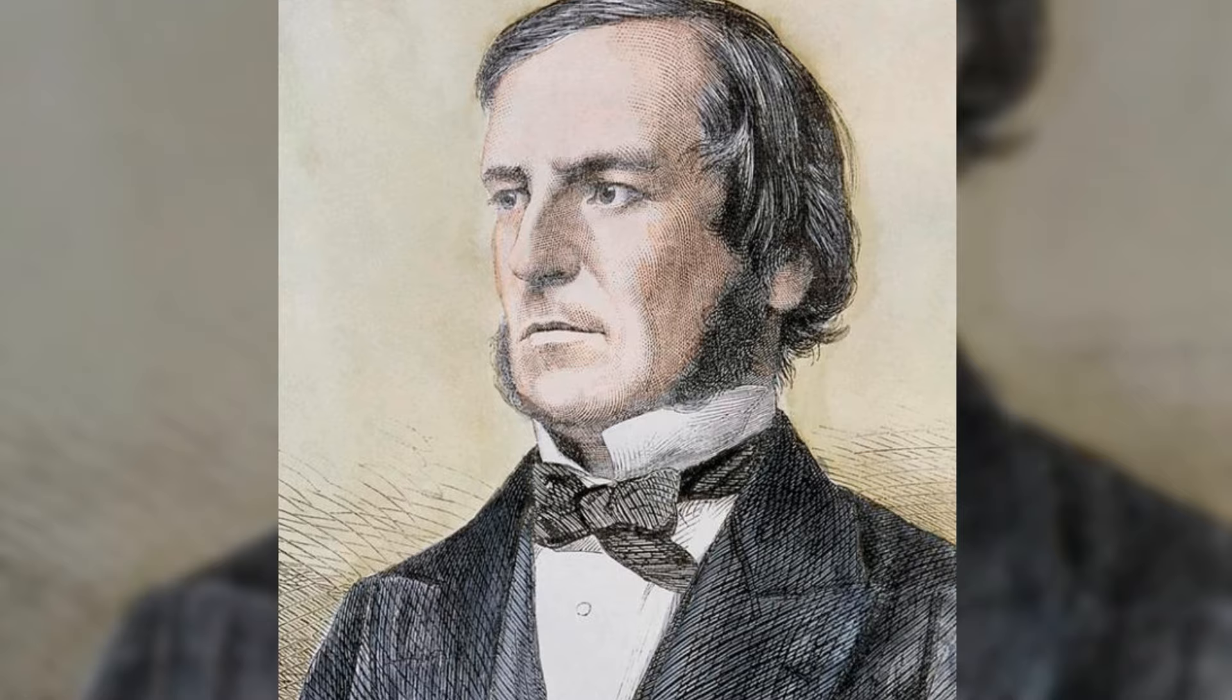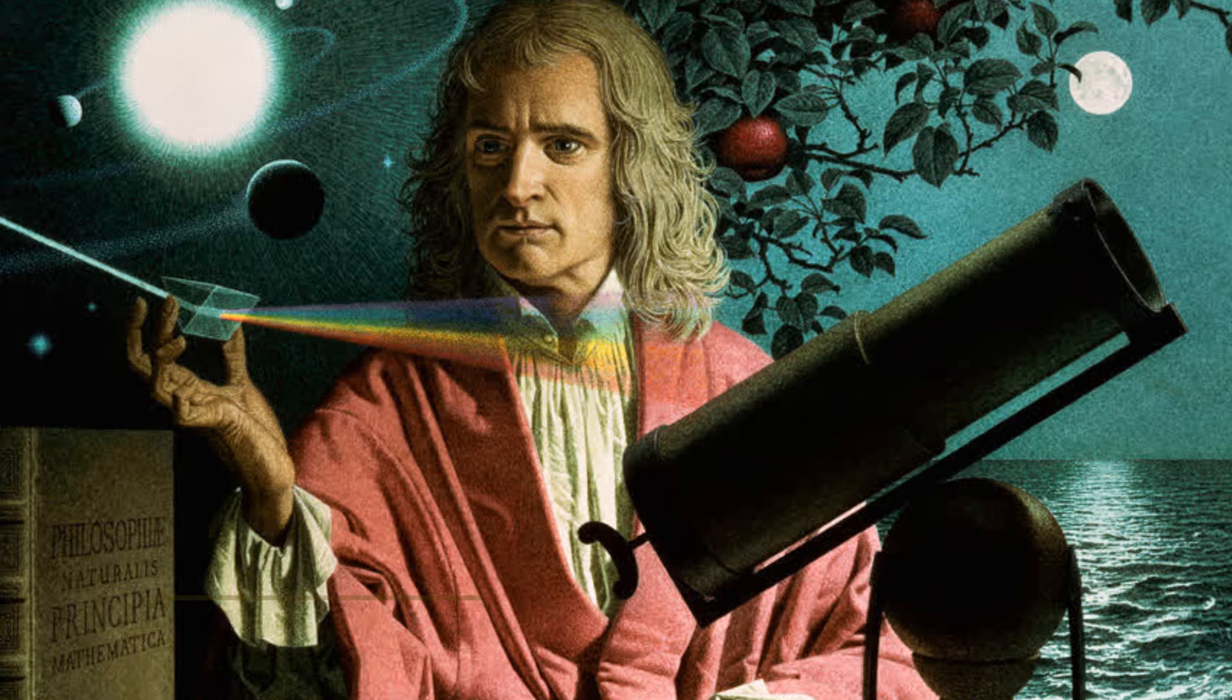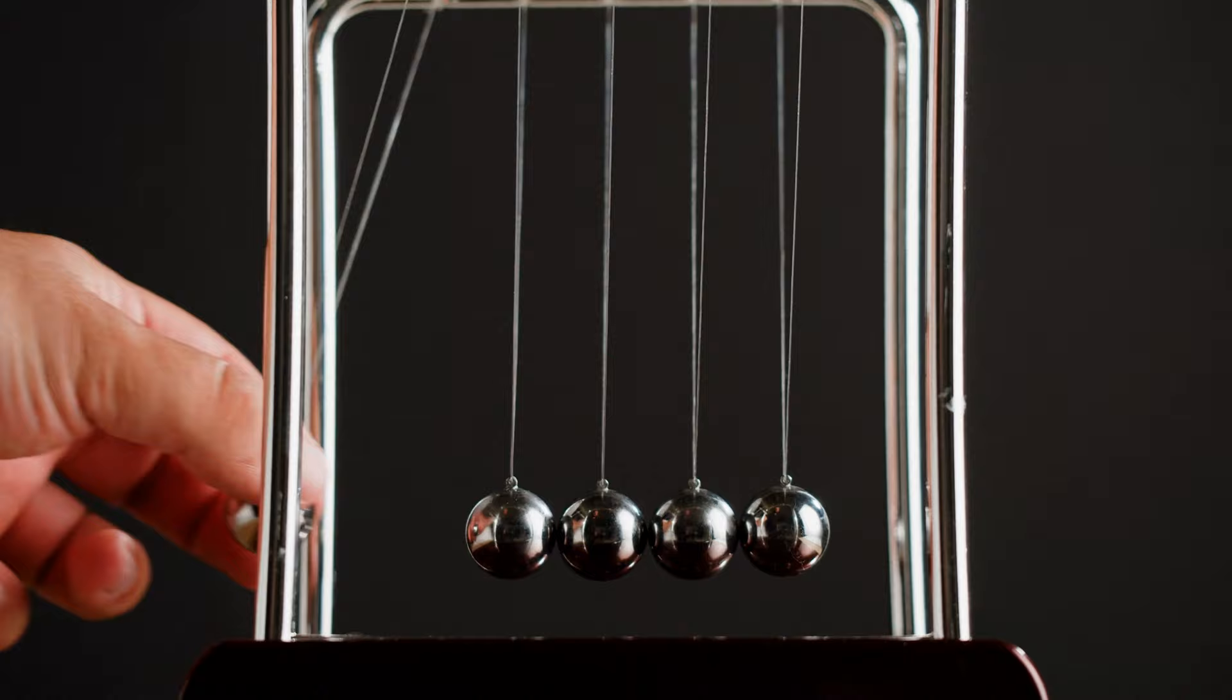Number 1. Sir Isaac Newton. Sir Isaac Newton, one of the greatest mathematicians and scientists in history, made unparalleled contributions to mathematics, physics, and astronomy. His most famous work, Philosophiae Naturalis Principia Mathematica, laid the foundation for classical mechanics, introducing his three laws of motion and the law of universal gravitation.